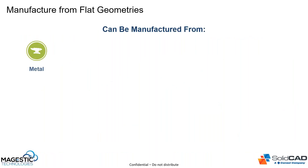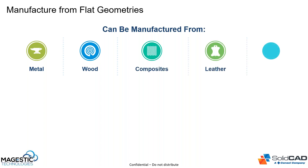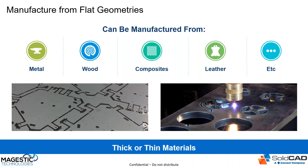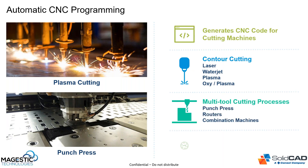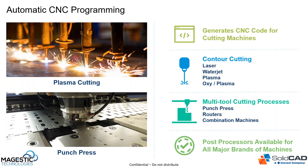TruNest works with a wide range of materials — metals, woods, composites, leathers, plastics — really anything that's two or two-and-a-half-D, thick or thin. Today we're covering CNC routers and punch presses, but we also support laser machines, water jets, plasmas, oxyfuel, and combination machines like punch-route and punch-laser. We write all of our post processors for these machines as well.